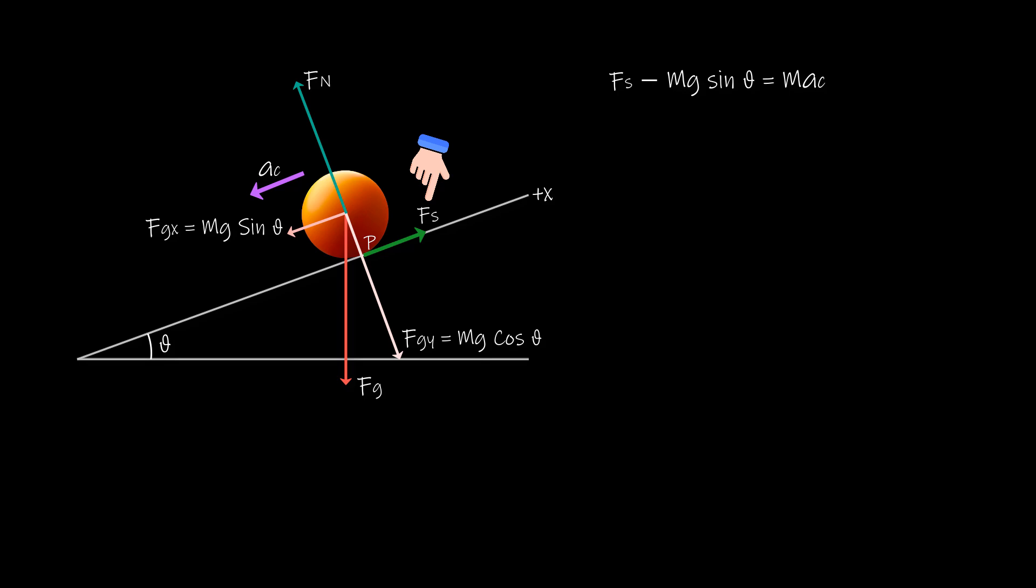Looking at this situation all we can conclude is that if there is no sliding then the force of friction that is static friction is just about enough to make the body roll smoothly and prevent sliding. So let us go ahead and write the second equation and we will apply Newton's second law to the body's rotation about its center of mass.